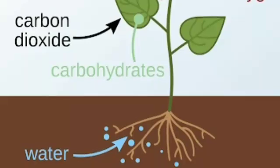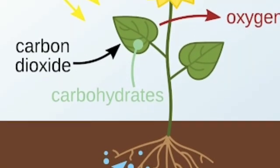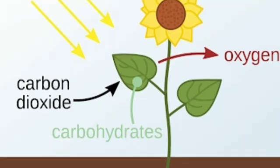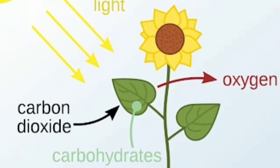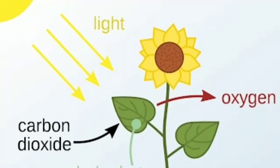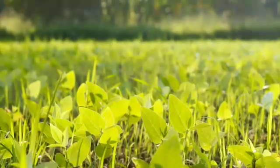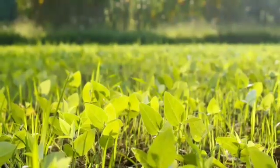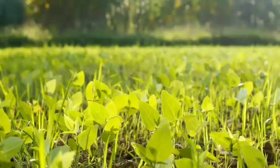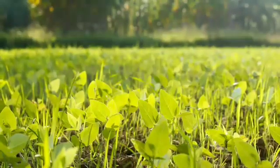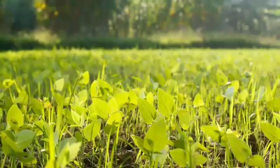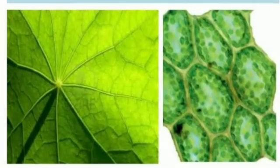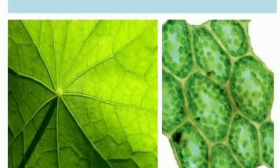The next thing plants need to make their food is energy. How do they get energy? The energy to make their food comes from the sun — that is light energy, sunlight. How does a plant absorb sunlight? What is the color of most plants? Yes, that is green. There is a green pigment present in the leaves of the plant. That green pigment is called chlorophyll.